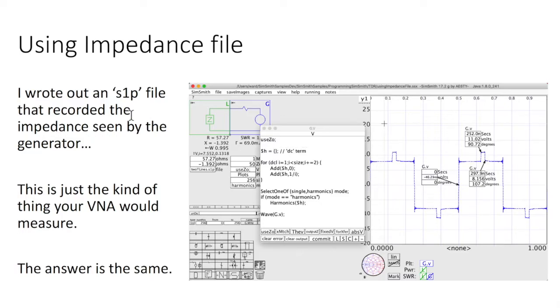So again, we're going to do the same square wave going in that we did before. Here's the program that wrote the square wave. And use just an impedance file. And the impedance file is exactly what you would have gotten out of your vector network analyzer. And you'll notice that, lo and behold, the answer is exactly the same, which is not surprising.